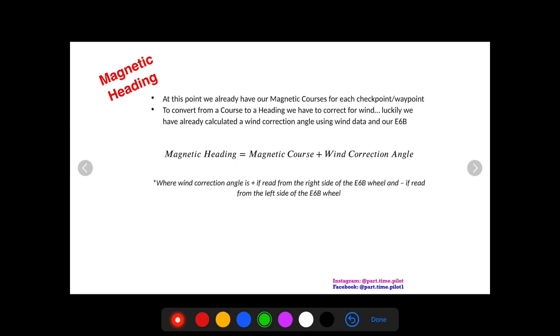So at this point we already have our magnetic course for each checkpoint. We have found our true course then we corrected for magnetic variation with our isogonic lines to get our magnetic courses. Now we got to remember we want a magnetic heading to fly off of. When we write down our magnetic heading that's what when we're in the plane we're going to look for on our heading indicator. So this is what we actually use when we fly.